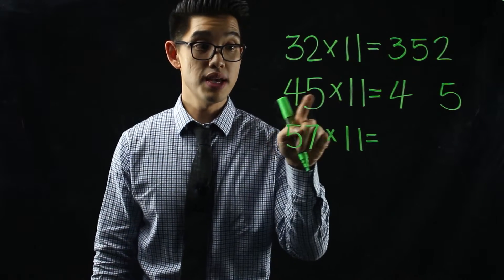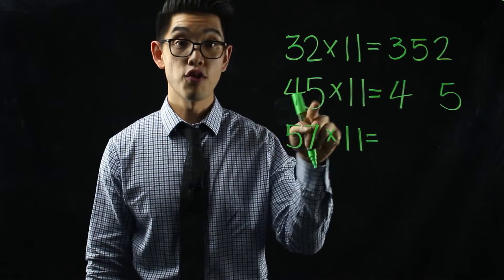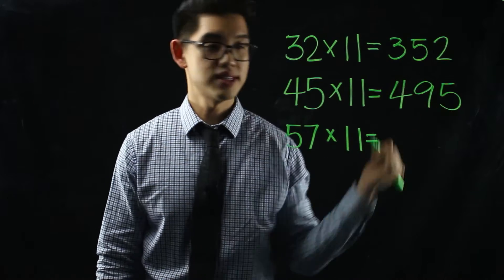The middle number here is going to be the sum of these two numbers. Three plus two is five, so you're gonna write down five.